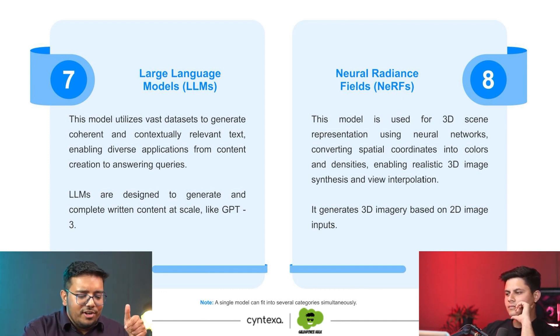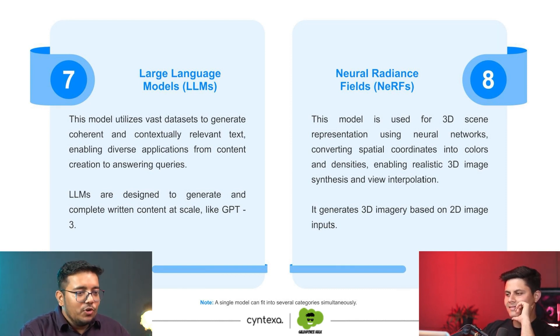Then we have Neural Radiance Fields, or NeRFs. A NeRF is a model that can generate 3D models based on 2D images. You just send in a photo of, say, a mobile phone, and it will create a 3D model of it automatically on its own. These are some of the most widely used and common models in Generative AI. There are various others as well, but we won't be able to cover all of them in this webinar.